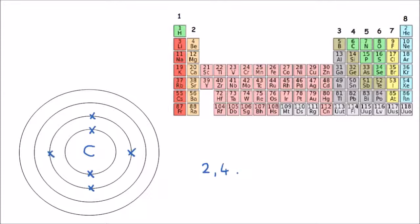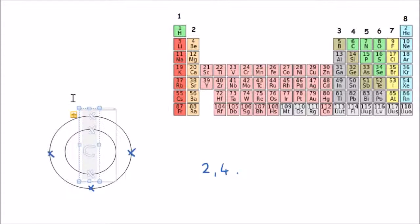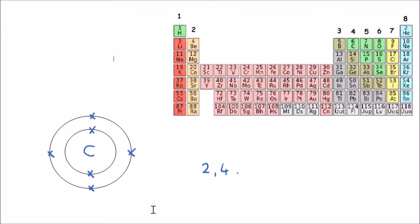Of course, we don't need the outermost empty electron shells, so we can just get rid of them and leave it like that. And that's the electronic configuration for carbon.